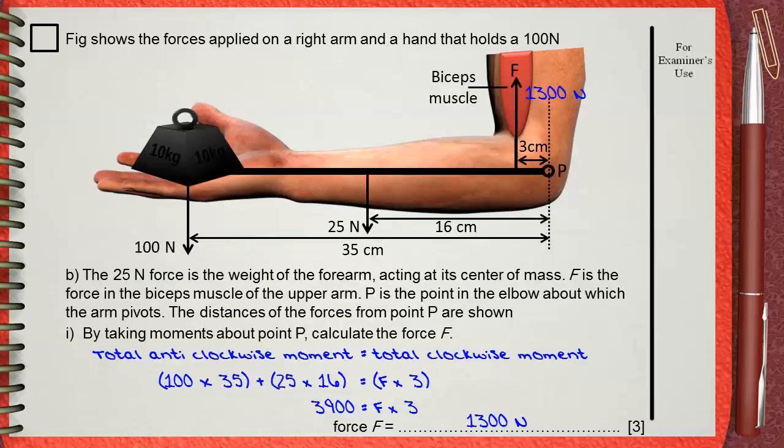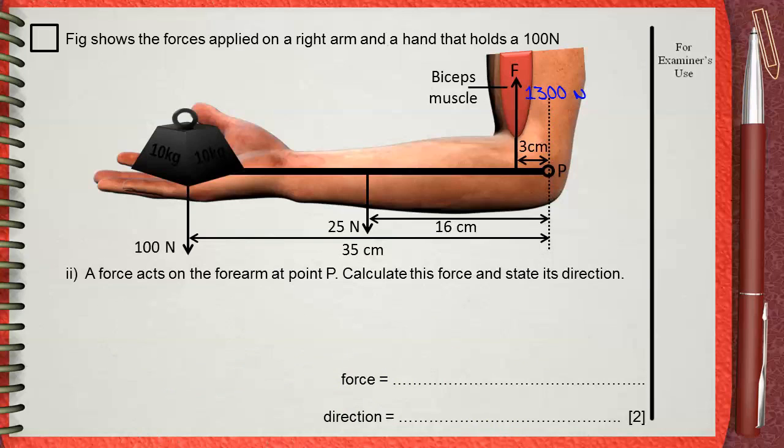Question ii: A force acts on the forearm at point P. Calculate this force and state its direction.